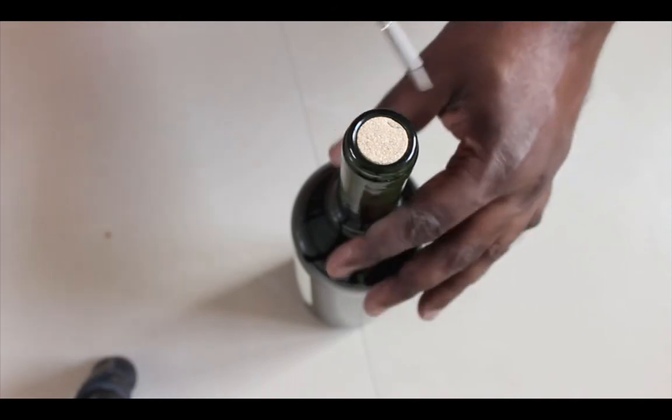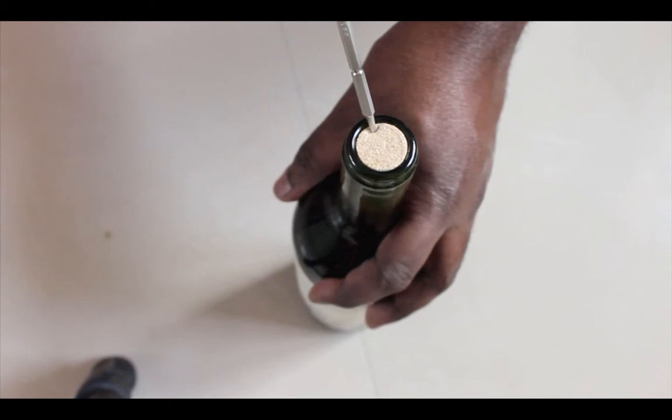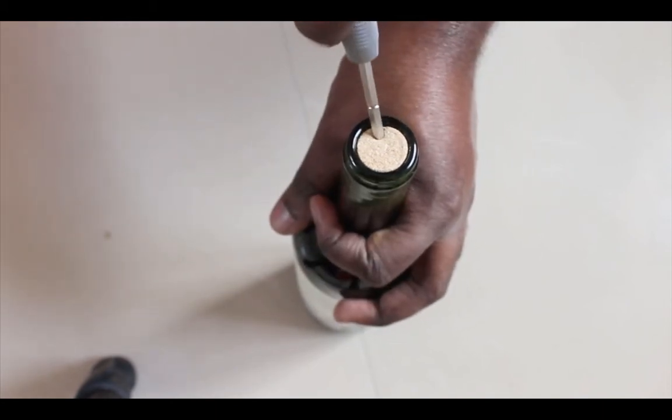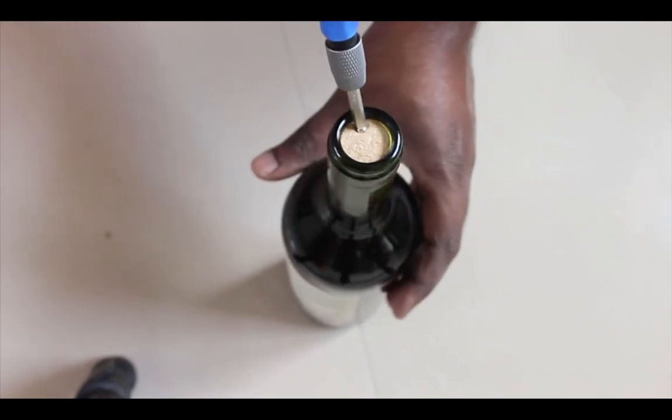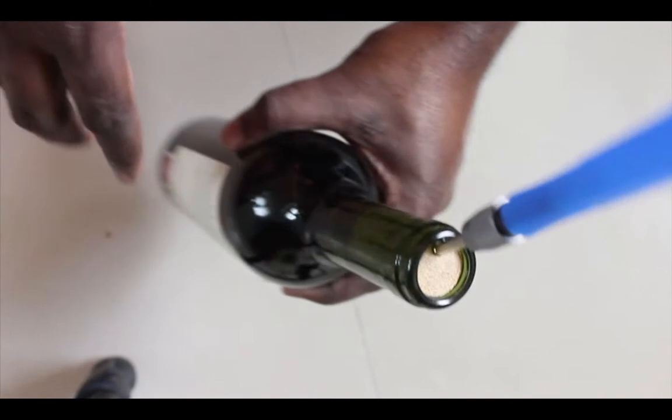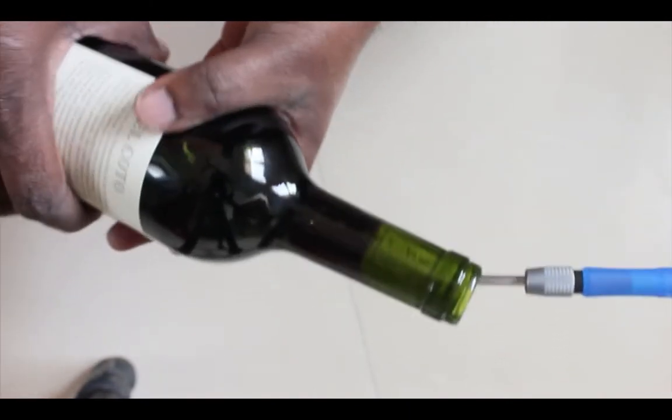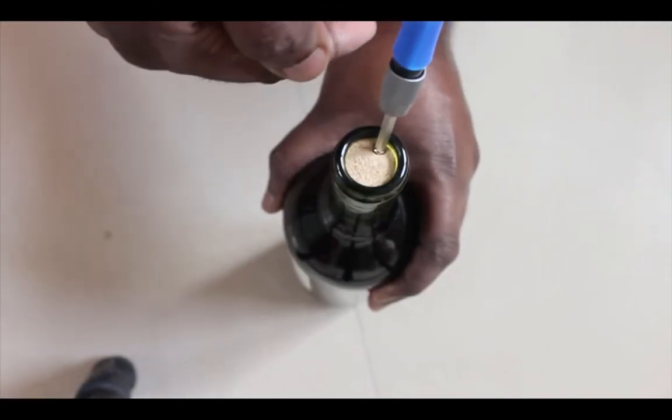We need to insert this screwdriver into the cork at this angle. This angle is very important, so we need to push as deep as you can. We need to insert the screwdriver like this.